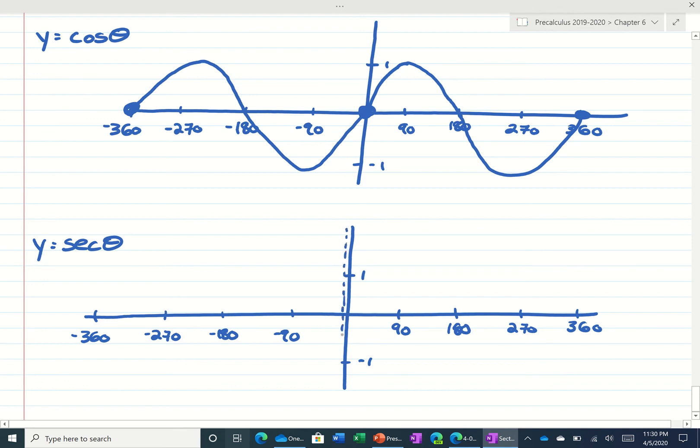Now to draw this quickly, the period of secant is 360, which means 360 degrees later it's undefined, and 360 degrees before it's undefined. We also know that secant's alternating parabolas. So when cosine is one right here at zero, this would also be one. Then it's got to go undefined at 90, and then negative one at 180 before you get to that 360 asymptote.